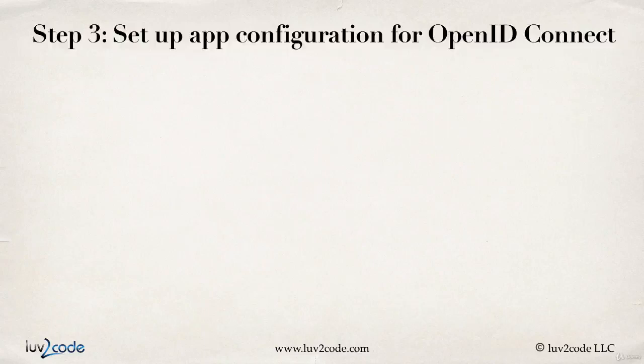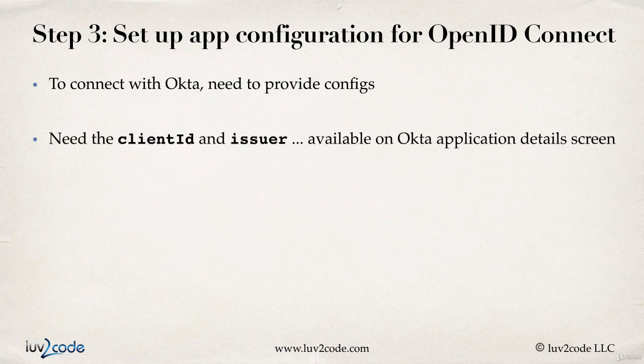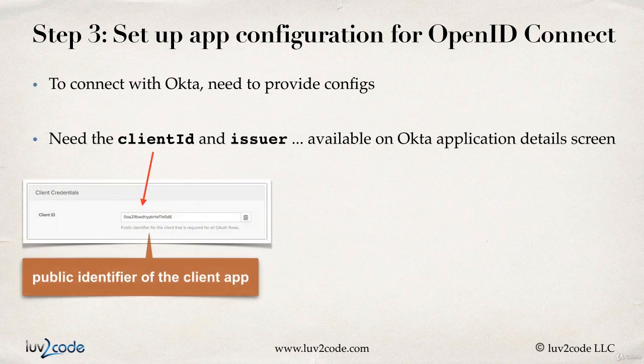In step three, we'll set up our app configuration for OpenID Connect. To connect with Okta, we need to provide some configs — specifically the client ID and the issuer. This information is available on the Okta application details screen under client credentials. The client ID is a public identifier of the client app, and we'll use this information in our Angular application.